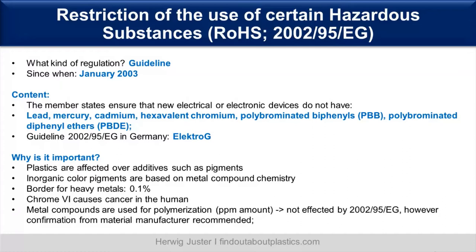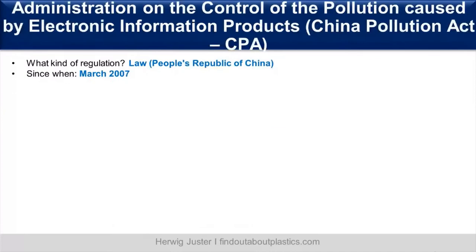Why is RoHS important? Plastics are affected because additives such as color pigments are most of the time based on metal compound chemistry. Borders are set for the use of heavy metals — in this case 0.1% — and especially chromium 6, which causes cancer in humans, requires extra care. Metal compounds used for polymerization itself are only present in parts-per-million amounts and are not affected by this guideline; however, a confirmation from the material manufacturer is always recommended.